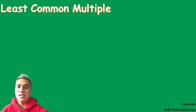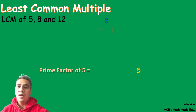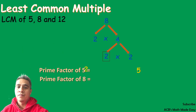Our last example is the LCM of 5, 8, and 12. 5 can be factored out by 1 times 5. The prime factor of 5 is 1 and 5 — just list 5, because 1 is a common factor to all numbers. 8 can be factored out by 2 times 4, and 4 can be factored out by 2 times 2. So the prime factors of 8 are 2, 2, and 2.